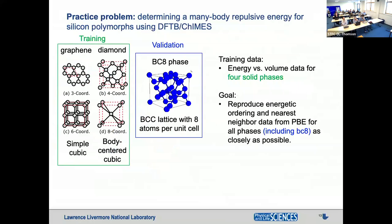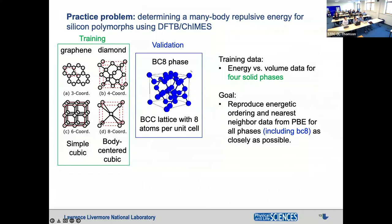Here's our problem for the day: determining a many-body repulsive energy for silicon polymorphs using DFTB-CHIMES. We train to data from graphene, diamond, simple cubic, and the BCC lattice — many different coordination numbers — and validate against those plus a BC8 phase, which is a unique high-pressure phase of silicon with a BCC lattice where the repeating unit is eight atoms instead of one. We train on energy-versus-volume data for four solid phases and some MD data. Our goal for this first snapshot is to see if we can get the energetic ordering right, get the nearest-neighbor distances right, and how we do for an entirely new phase — the BC8 phase.